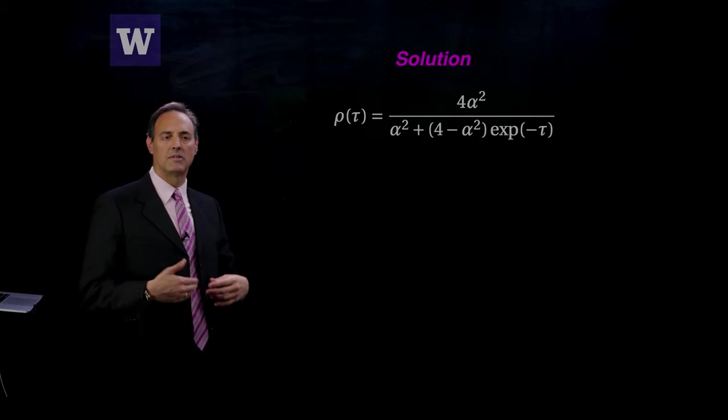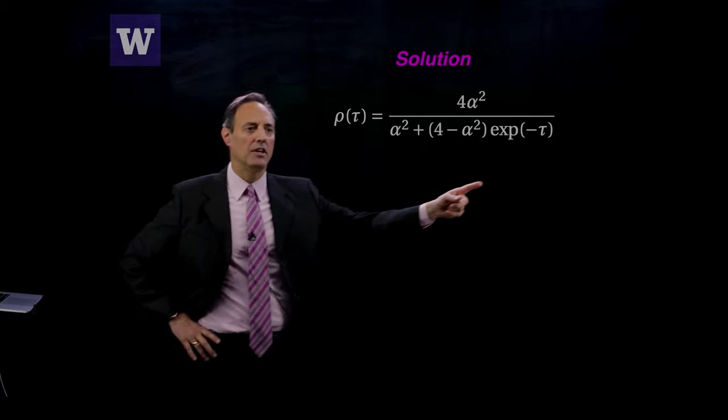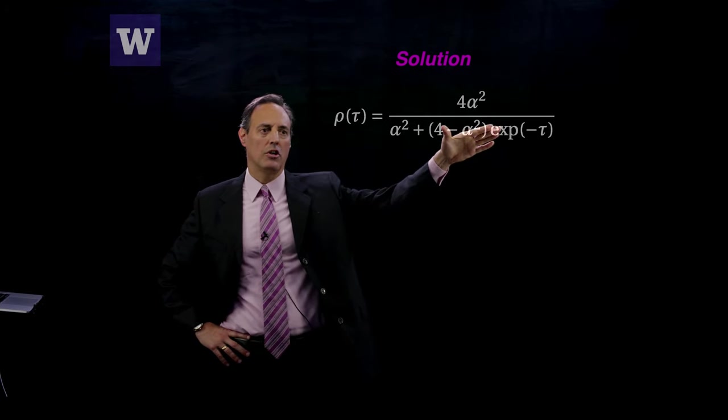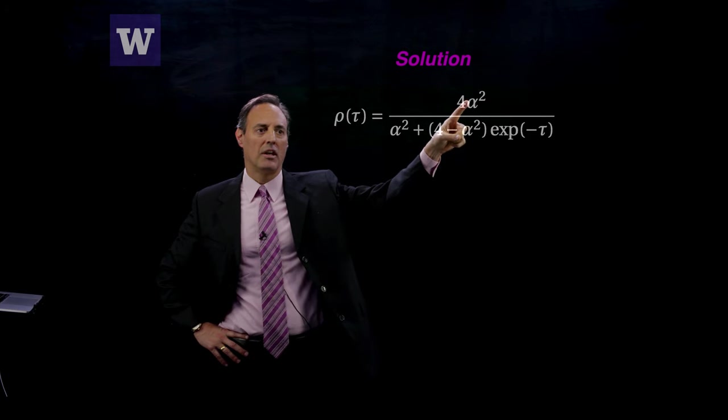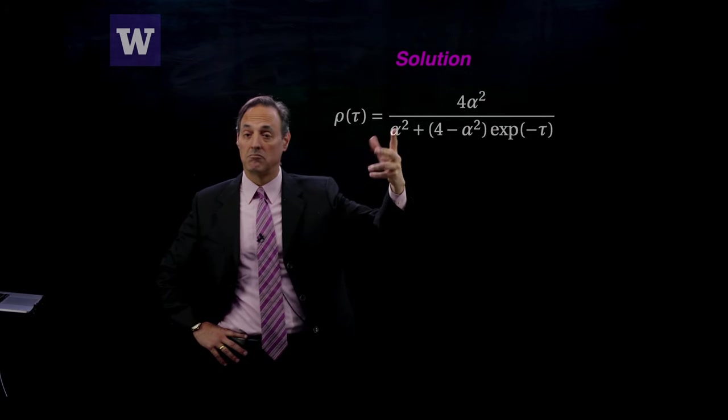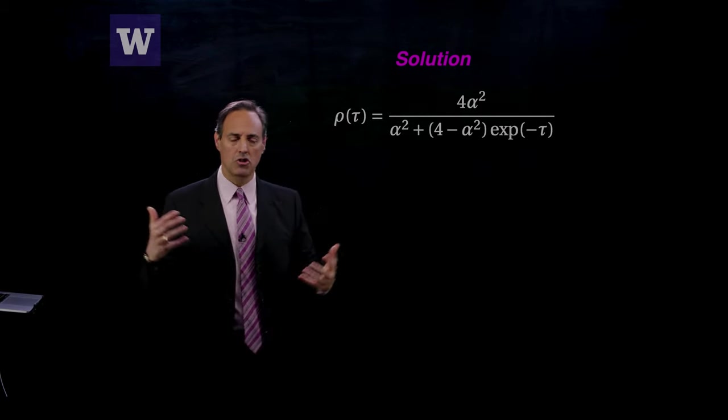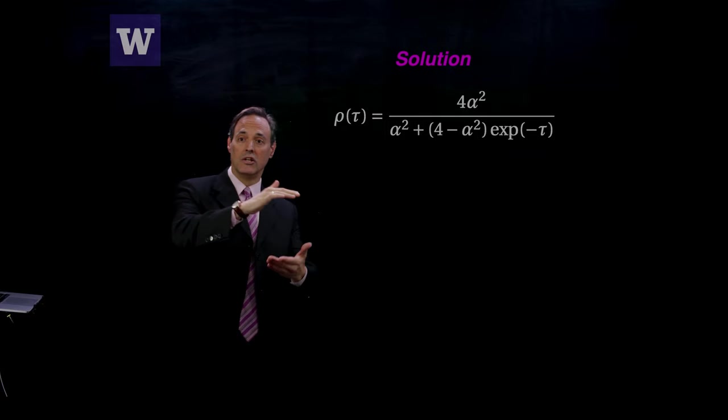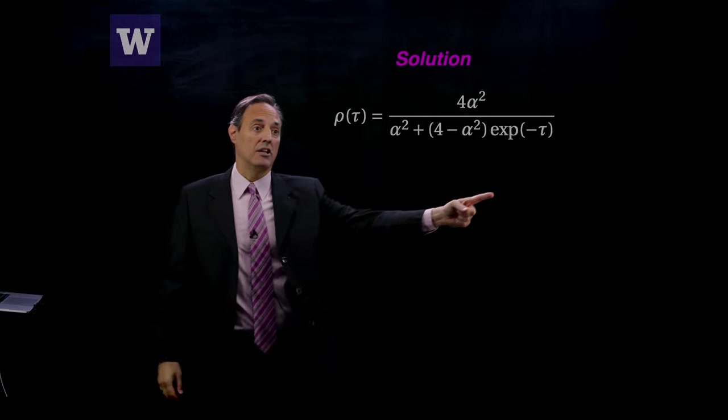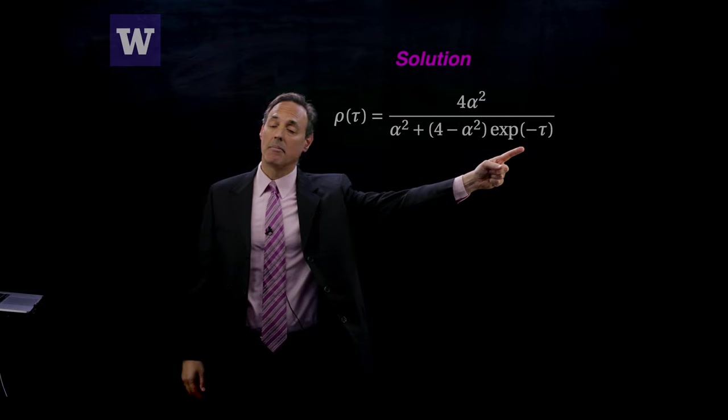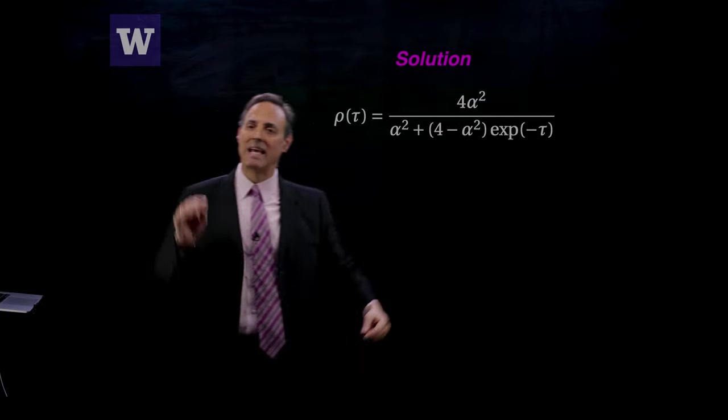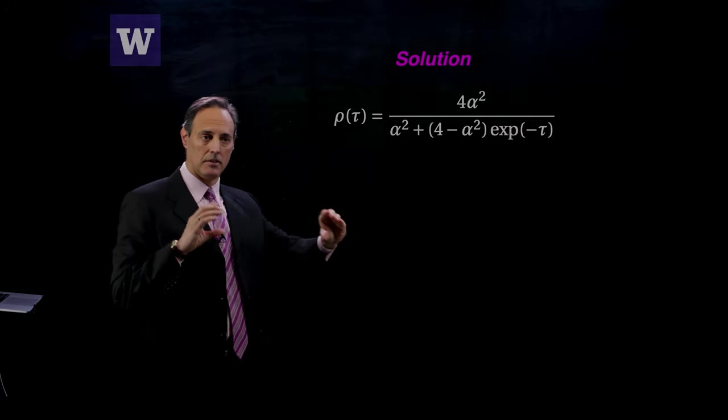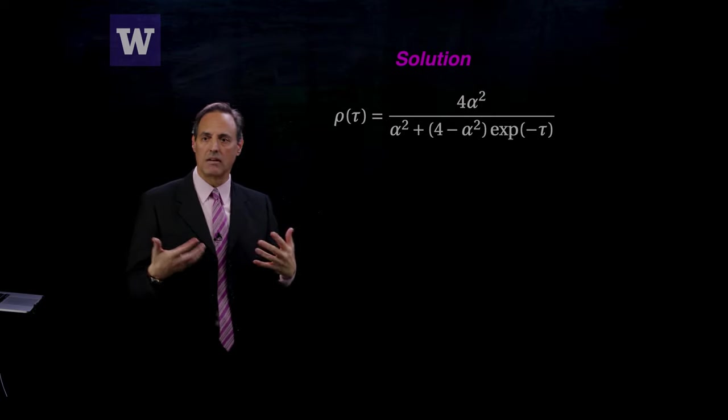What happens as tau gets big? This e^(-τ) is going to go to zero, so all these terms drop out, and you're going to get 4α^2/α^2. So it's going to go to 4. You're initially going to start off with some value, and this thing is going to exponentially decay to the value of 4. It's going to exponentially decay on a slow scale, e^(-τ). Remember that tau is epsilon t. If epsilon is small, that means it's going to take a long time for it to decay into that solution, that state, that value of 4.